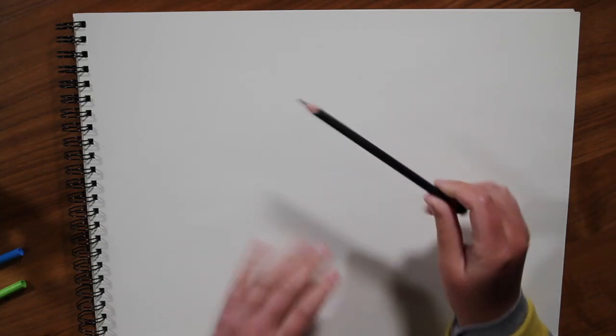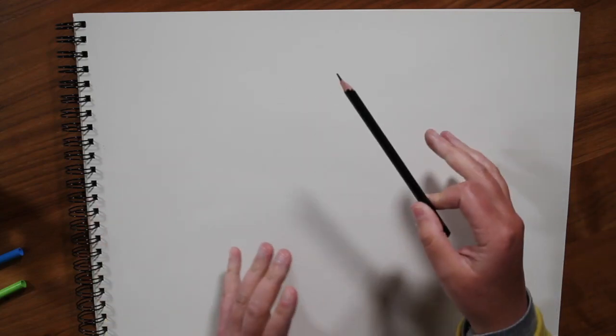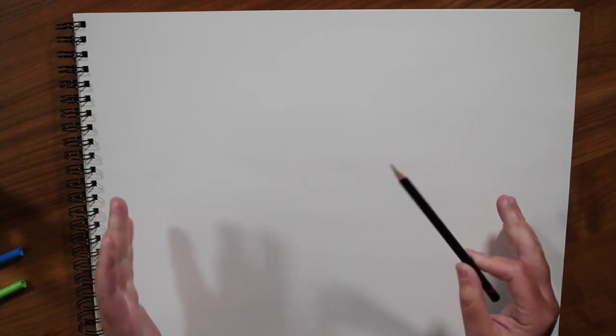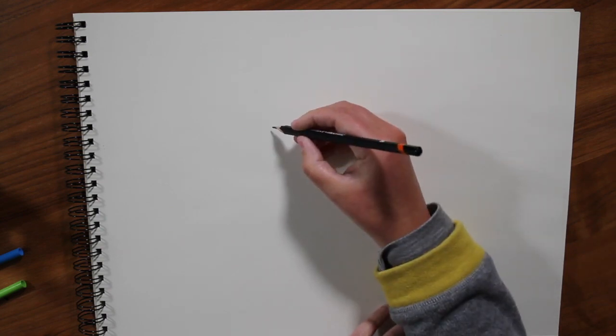So we're going to start with our pencil and our sheet of paper and you can have the sheet of paper in any direction you want. I quite like it landscape but you could have it portrait or you could have it on an angle, whatever you fancy. And I'm going to go slap bang in the middle and start my blue tit there.